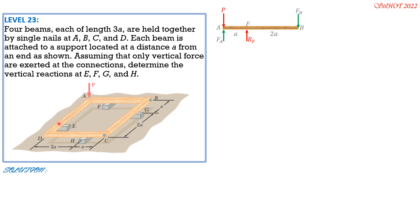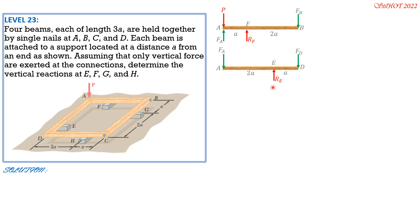For beam AFB: reaction at F, pin at A with nail force F_A (vertical), and nail force F_B assumed downward at B. For beam AED: from A to E is 2A, F to B is 2A. Reaction R_E is upward; by action-reaction, F_A is upward on AED (downward on the next FBD). Nail force F_D is assumed downward.